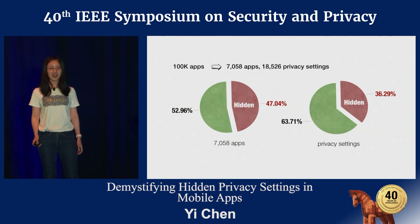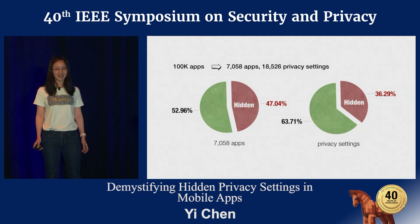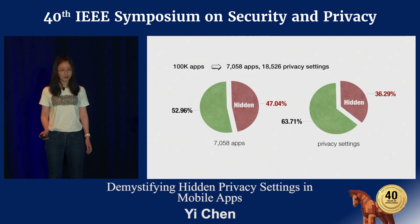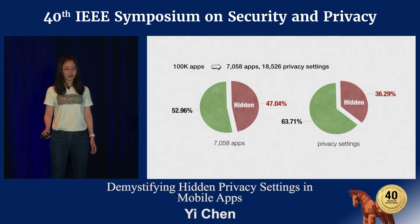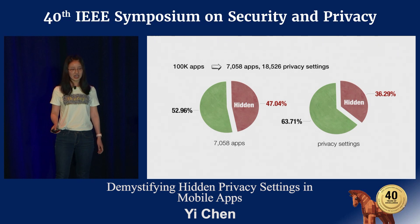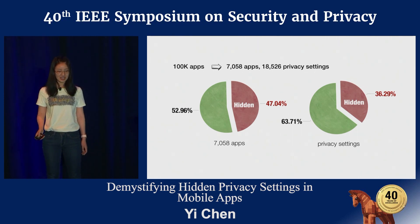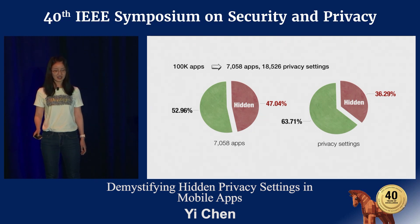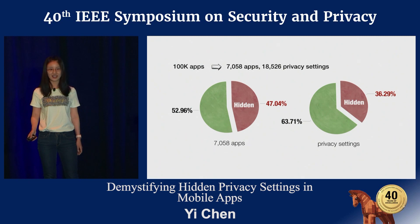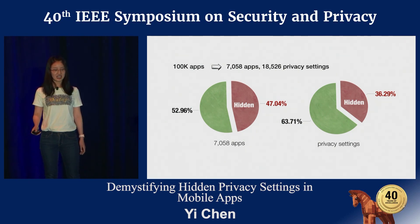We developed our tool Hound and used it to analyze 100,000 apps from the real world. We found about 7,000 apps have approximately 18,000 privacy settings. Among the 7,000 apps, nearly half have hidden privacy settings, and more than one-third of all privacy settings are difficult for users to locate. This result reveals that in the real world, the hidden privacy setting problem is pervasive.